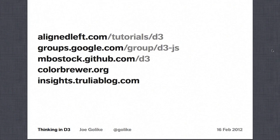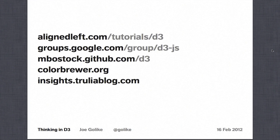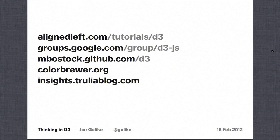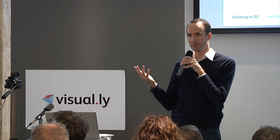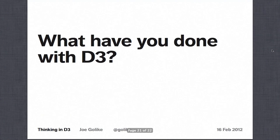There's the D3 Google Group, which is a great source for searching questions that other people have asked. I subscribe to it and daily there are dozens of messages being posted — it's super active and a great resource. The D3 website at mbostock.github.com is where you actually download the software and there are lots of great examples. Color Brewer is an excellent resource for inheriting lots of cool color schemes, particularly for working with maps, but really any data set where you want advice on what colors to use. And last, a shameless plug: insights.truliablog.com is my primary project at Trulia. Feel free to go there and if you know how to, inspect the source code and see how we made it work.